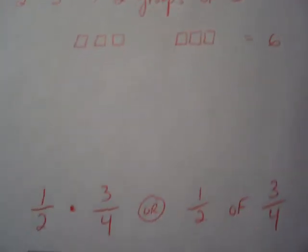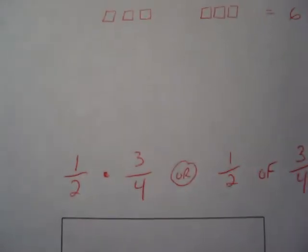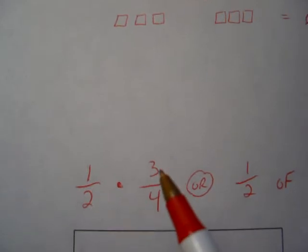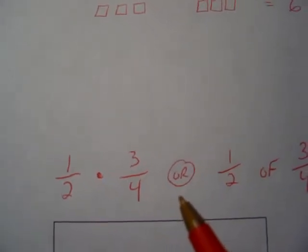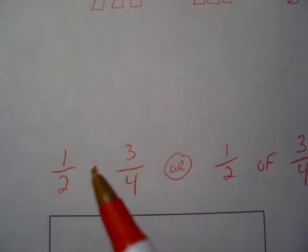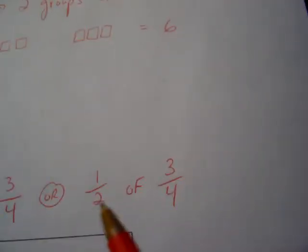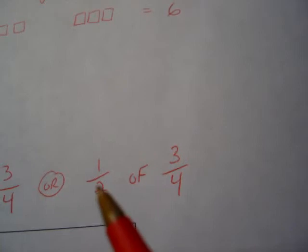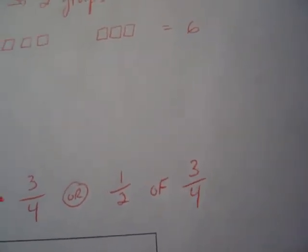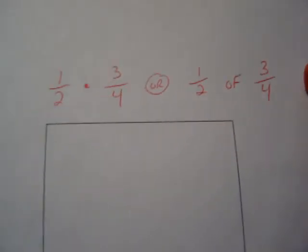Well, let's investigate this with fractions. This is what we've been working on in class. First example is going to be 1 half times 3 fourths, which I want everybody to think of as 1 half of, multiply is like using the word of, half of 3 fourths. Half of what? 3 fourths. So we have to start by drawing 3 fourths.